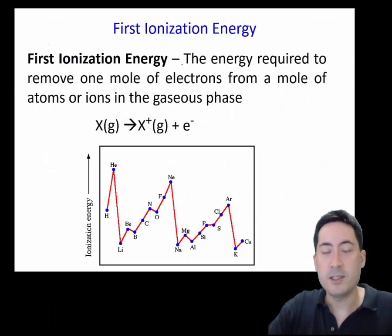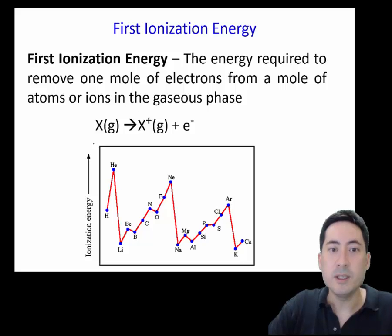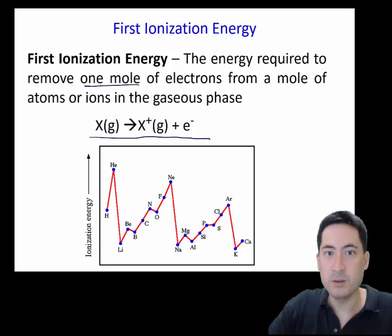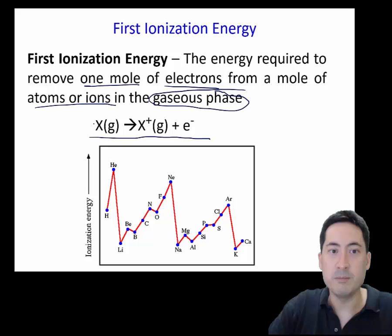Now, the first ionization energy we've covered in topic two. So this is, hopefully, a review. It's the gaseous state. You must always say one mole of electrons from atoms or ions in the gaseous phase. This is so important, it's often underlined. And it's a complete mole. So that equation represents one mole of this, giving one mole of this, losing just one electron in the gaseous state. And so go back to topic two, if you're a bit unclear about why there are these jumps here.